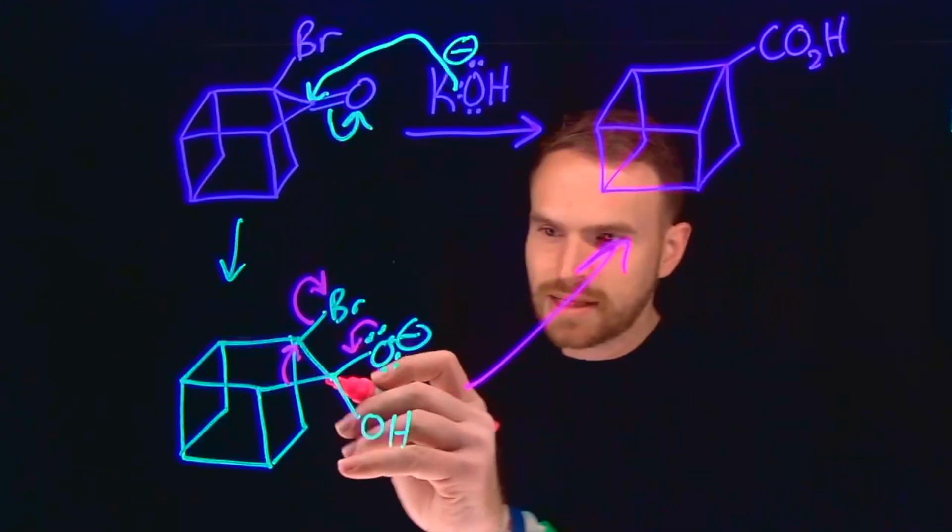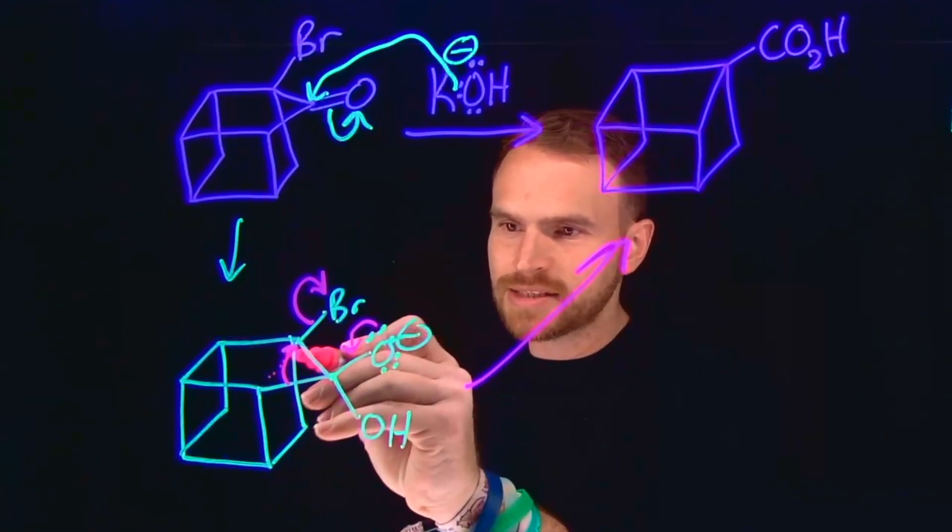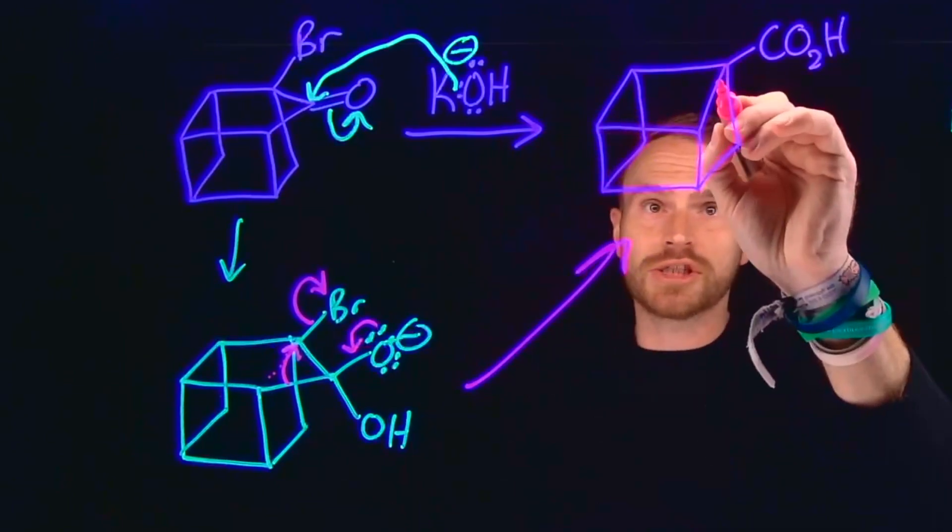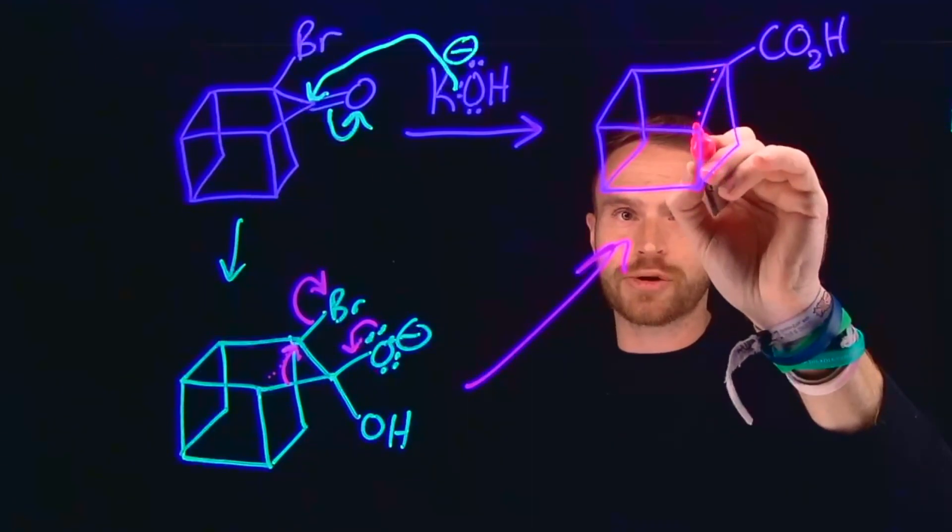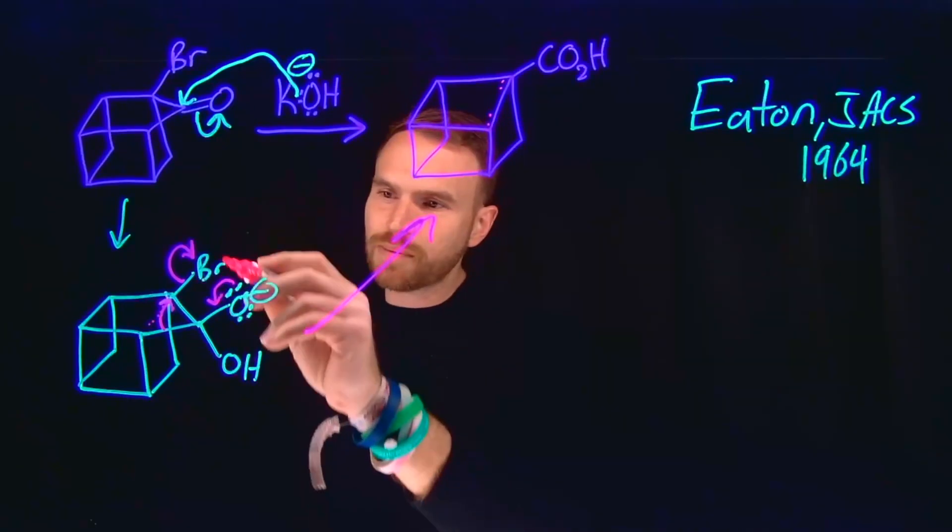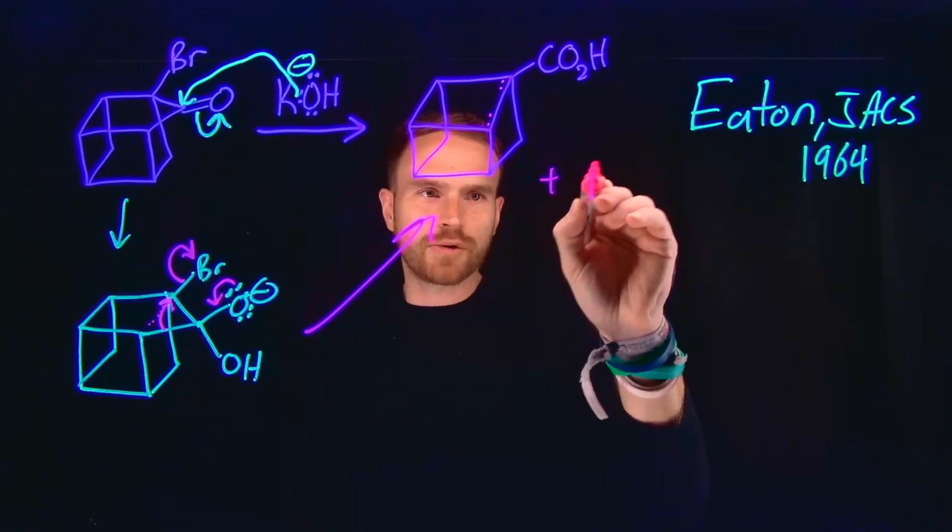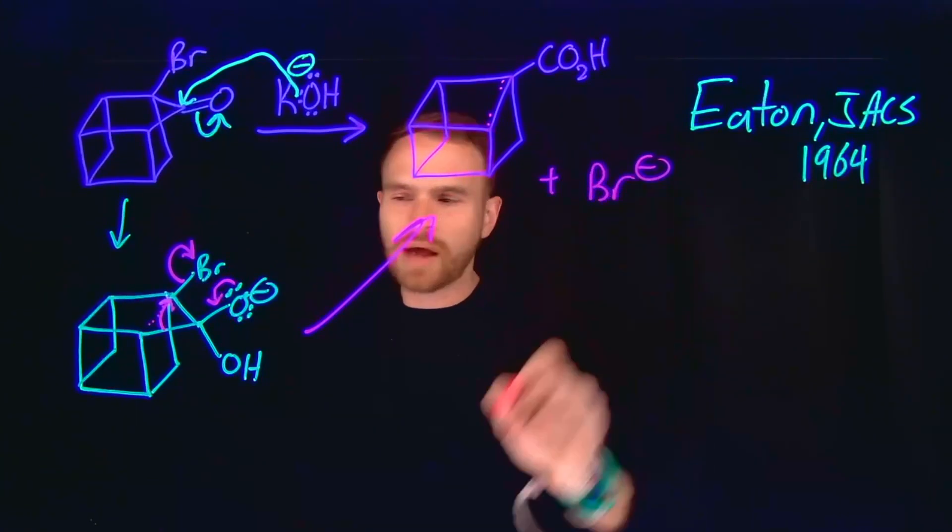Notice these electrons are used to form the ring that ends up being between these two carbons, which is located in our cubane structure here. This is possible because when bromide leaves, it is a great leaving group that will be relatively stable.